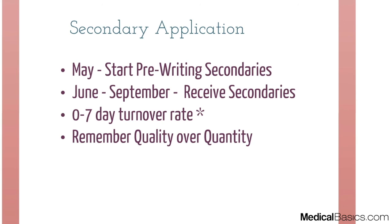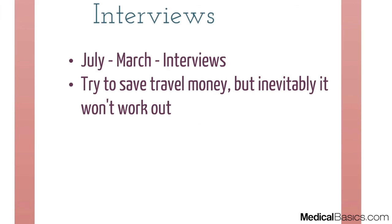From June through September, once you get verified, you'll be getting secondaries left and right — that's the goal. You should really try to have a zero to seven day turnover rate on secondaries. But remember: quality over quantity. If it's not ready, it's not ready — a fast turnaround doesn't help if the quality is sacrificed.